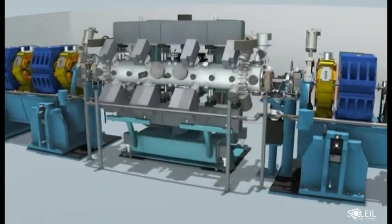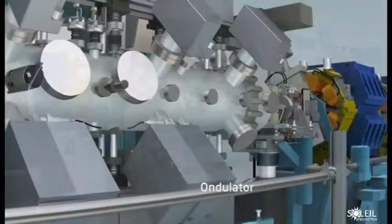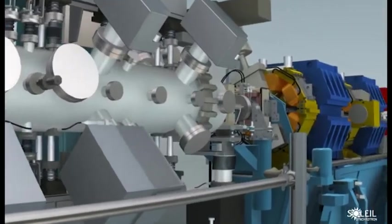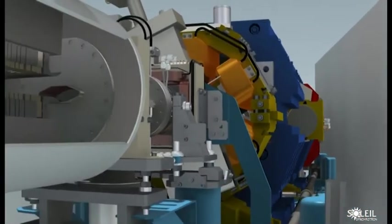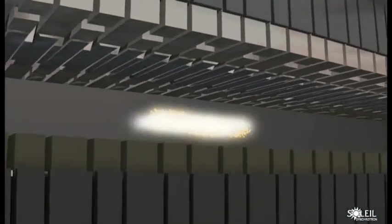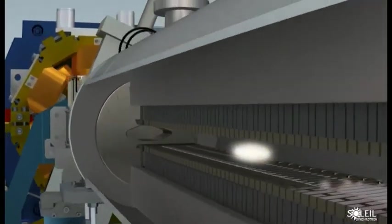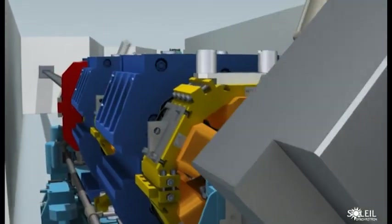In the straight sections of the ring, machines called undulators make the electron zigzag. The electron bunches pass between two rows of magnets in juxtaposition, which forces them to follow an undulating pathway. They then emit light, which accumulates the entire length of the setup, thereby becoming considerably brighter.